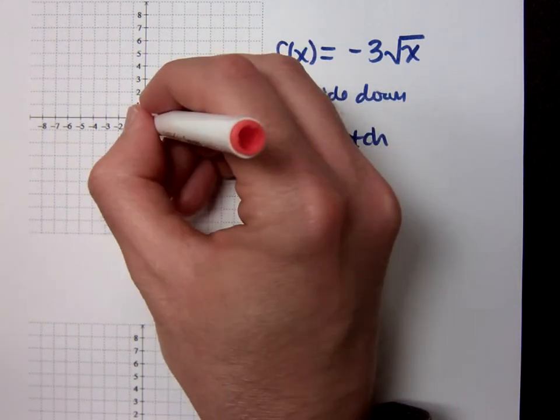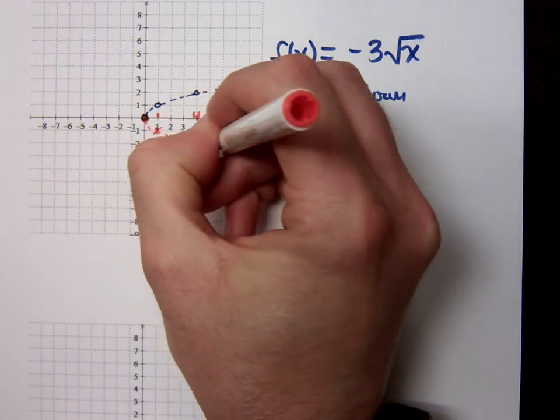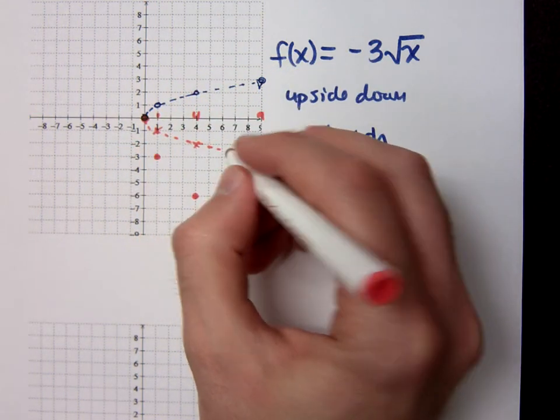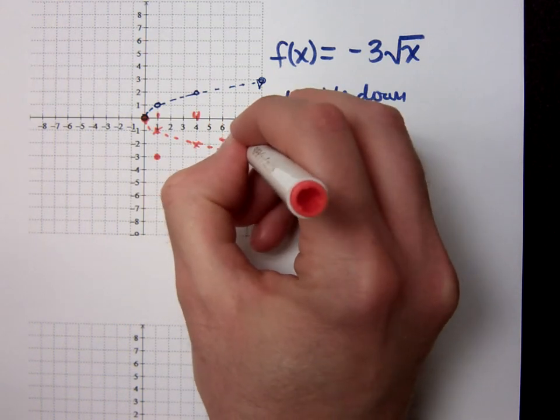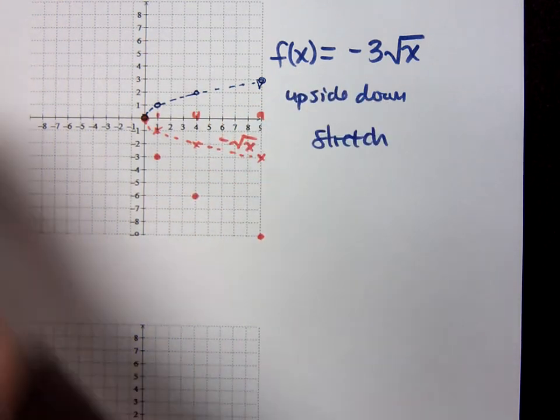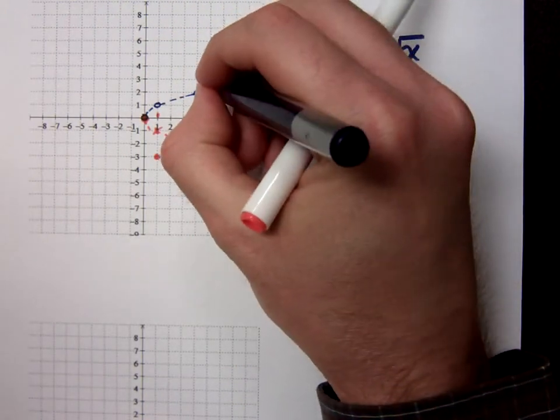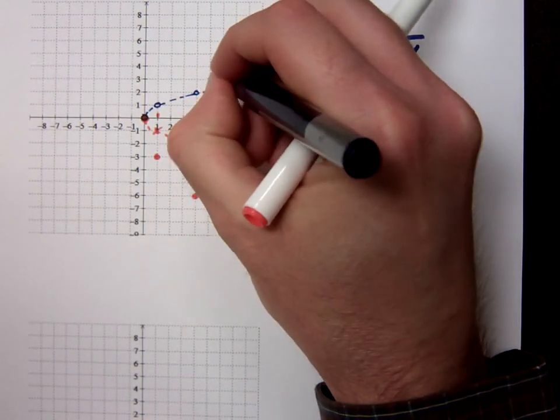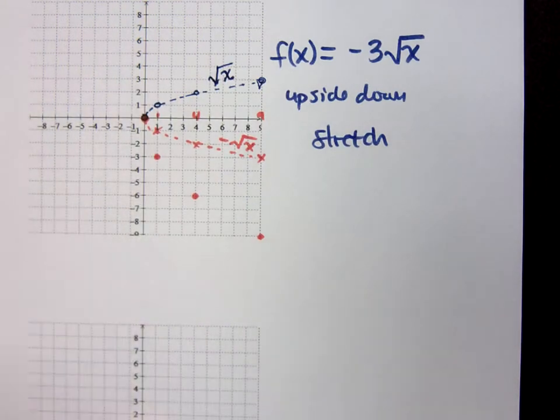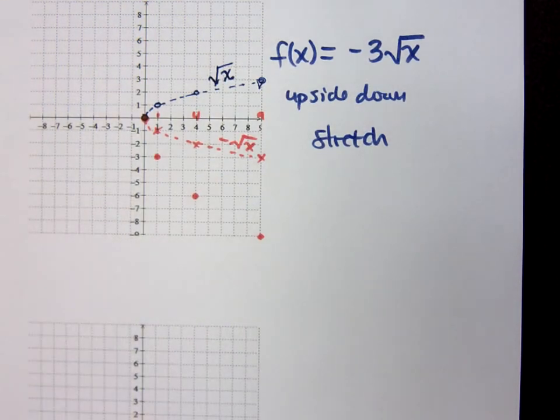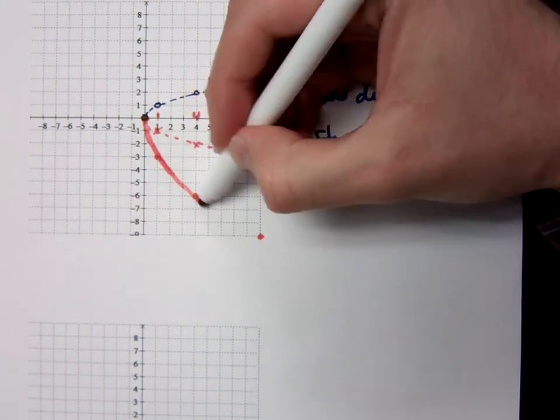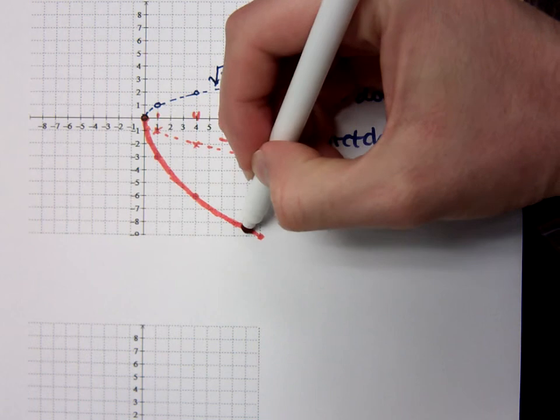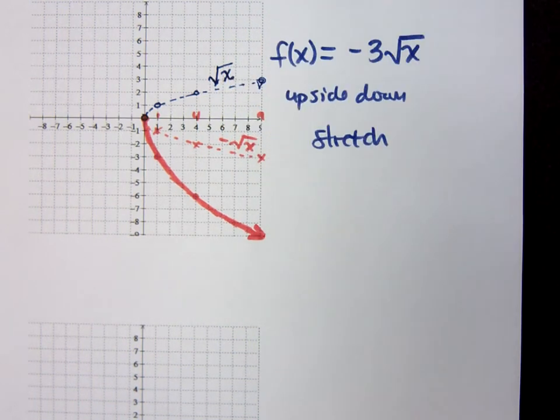See, I'm going to dash this guy for you so you see what I'm talking about. This dashed guy is negative the square root of x. The blue dashed guy is the original square root of x. But now that I've got negative 3 square roots of x, that's why I'm going to be a lot steeper. And so I'm just going to connect the dots like that.